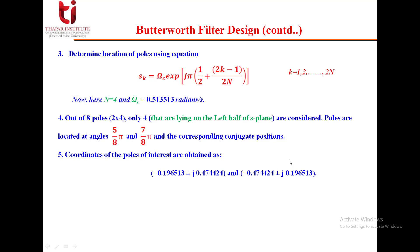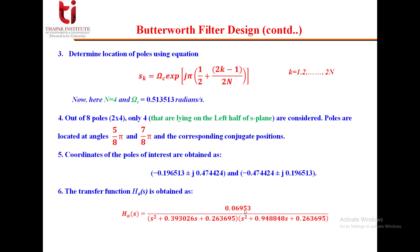From the four poles, we obtain the analog transfer function H_A(S). The numerator is 0.06953. The denominator combines conjugate pole pairs: the first factor is (S² + 0.393026·S + 0.263695), corresponding to two conjugate poles, and the second factor is (S² + 0.948484·S + 0.263695), corresponding to the other two poles.